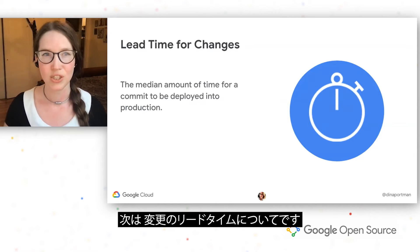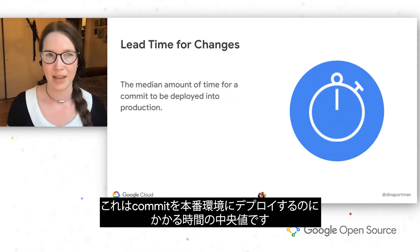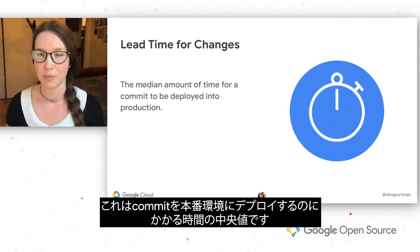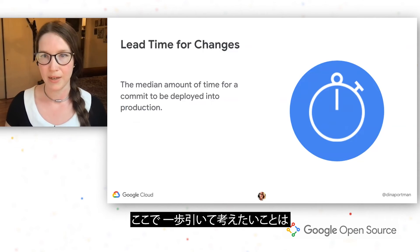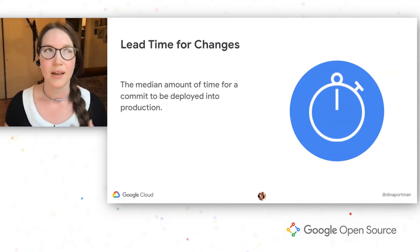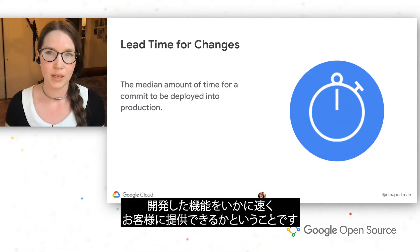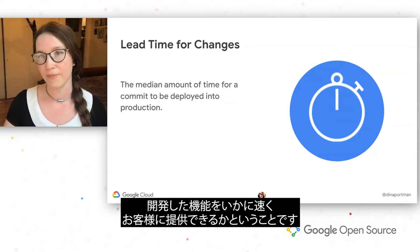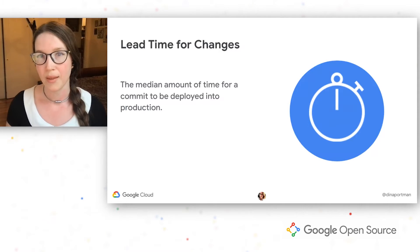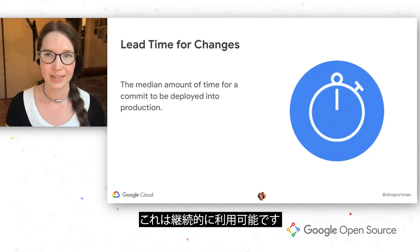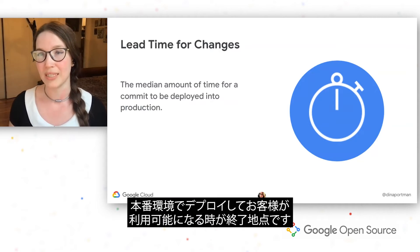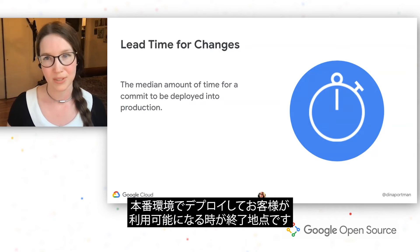Next, we have lead time for change, which is the median amount of time for a commit to be deployed into production. What we want to think about here is: how quickly can we develop a feature and for it to reach our customers? We start with the first commit because that is the first signal that we have that is consistently available, and then we end when it is deployed in production and available to the customers.